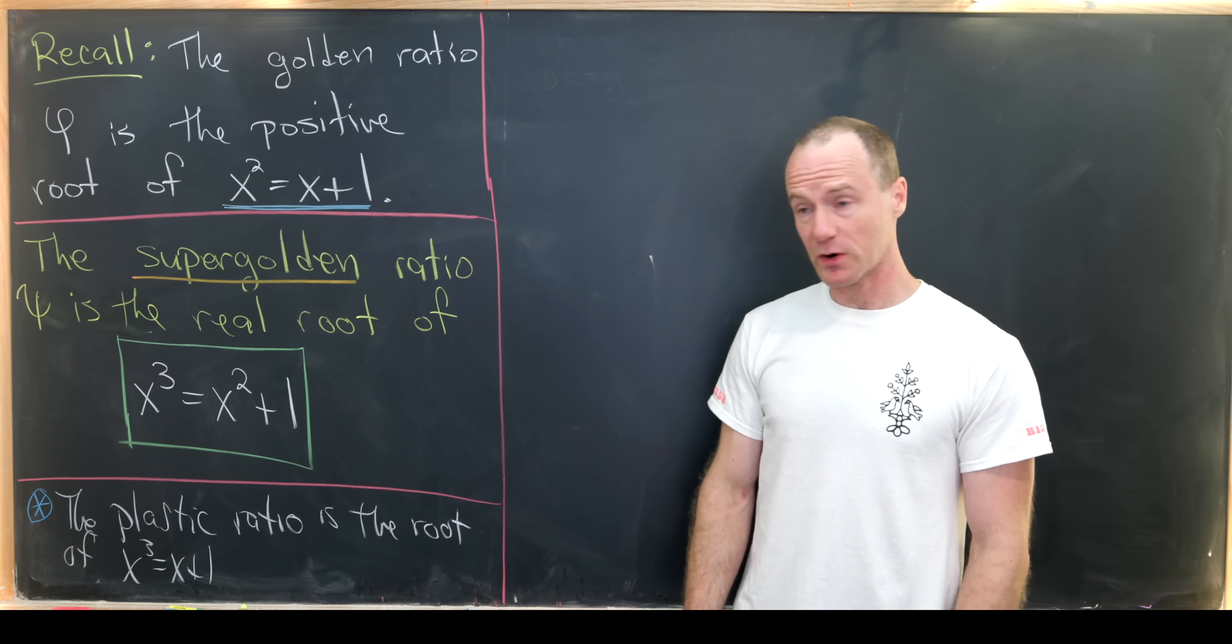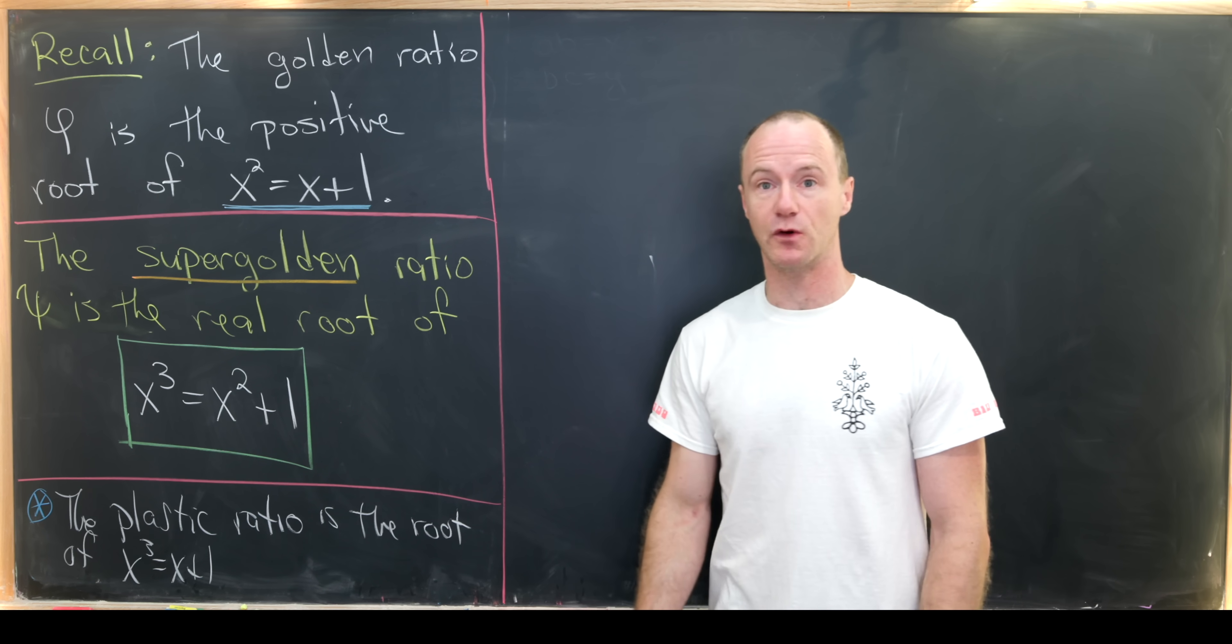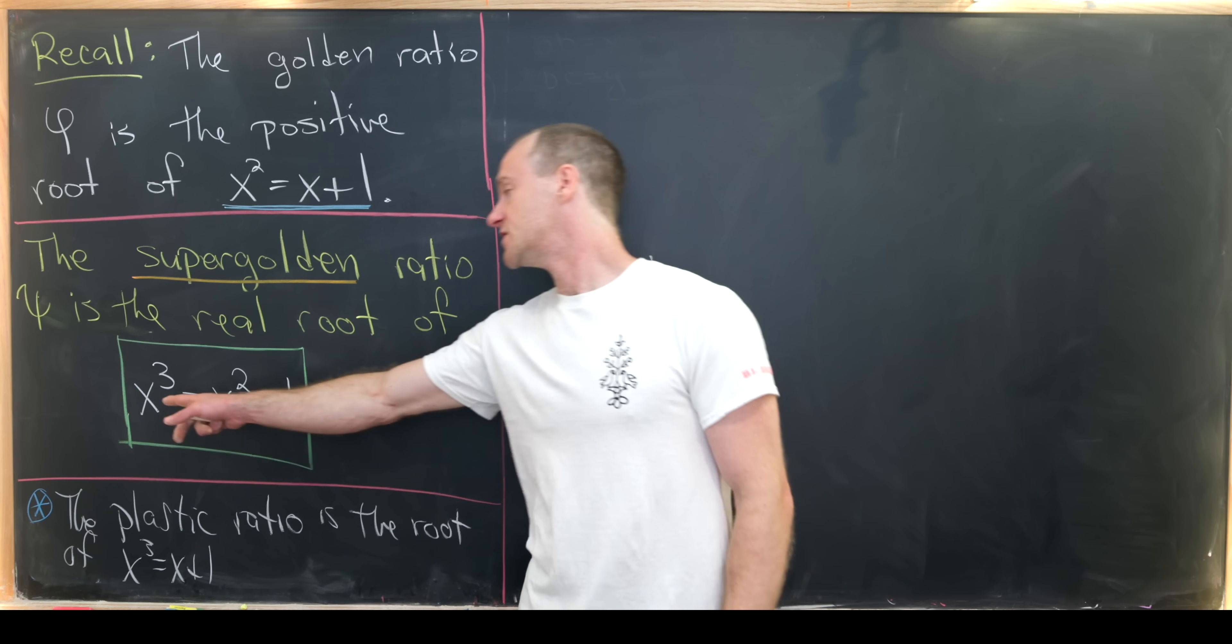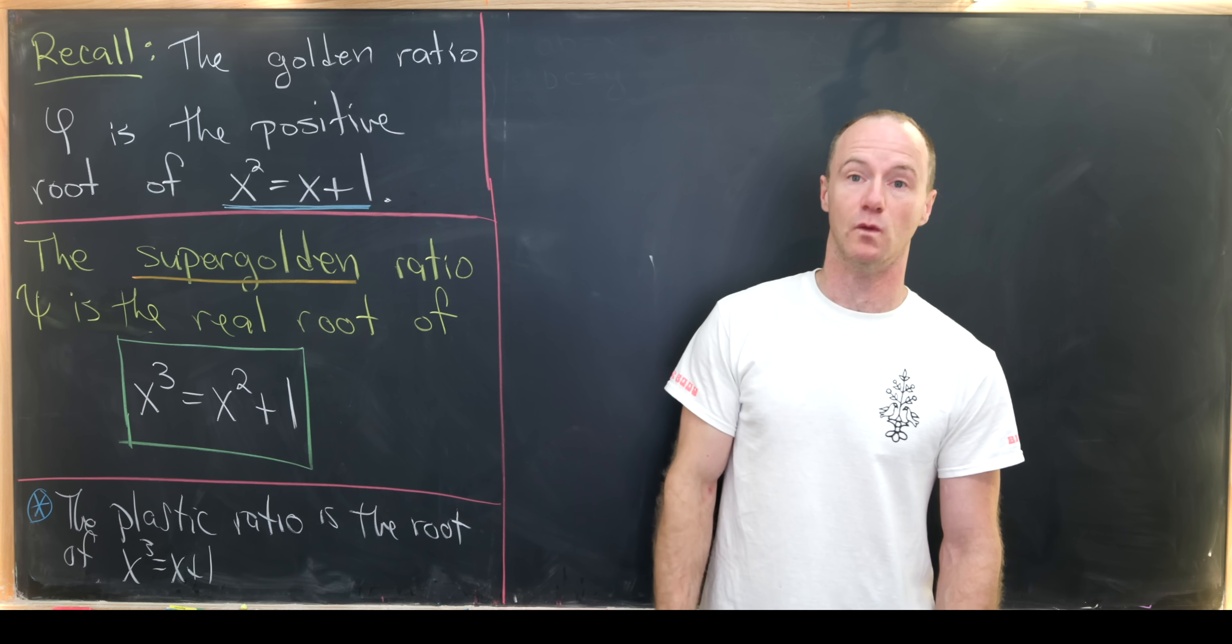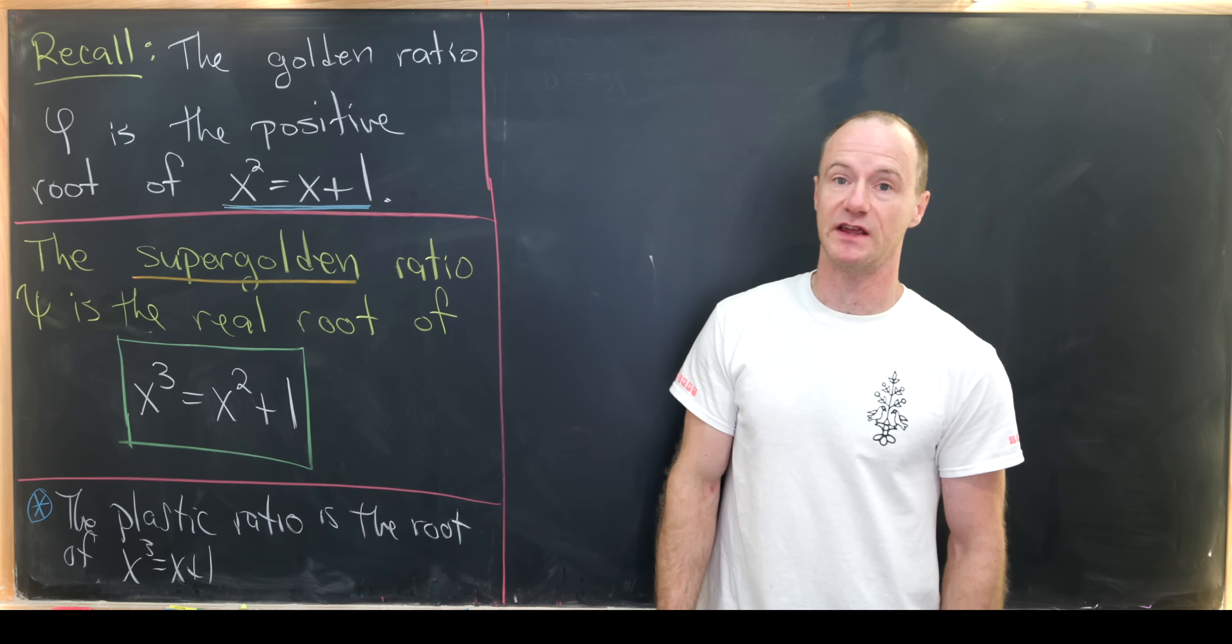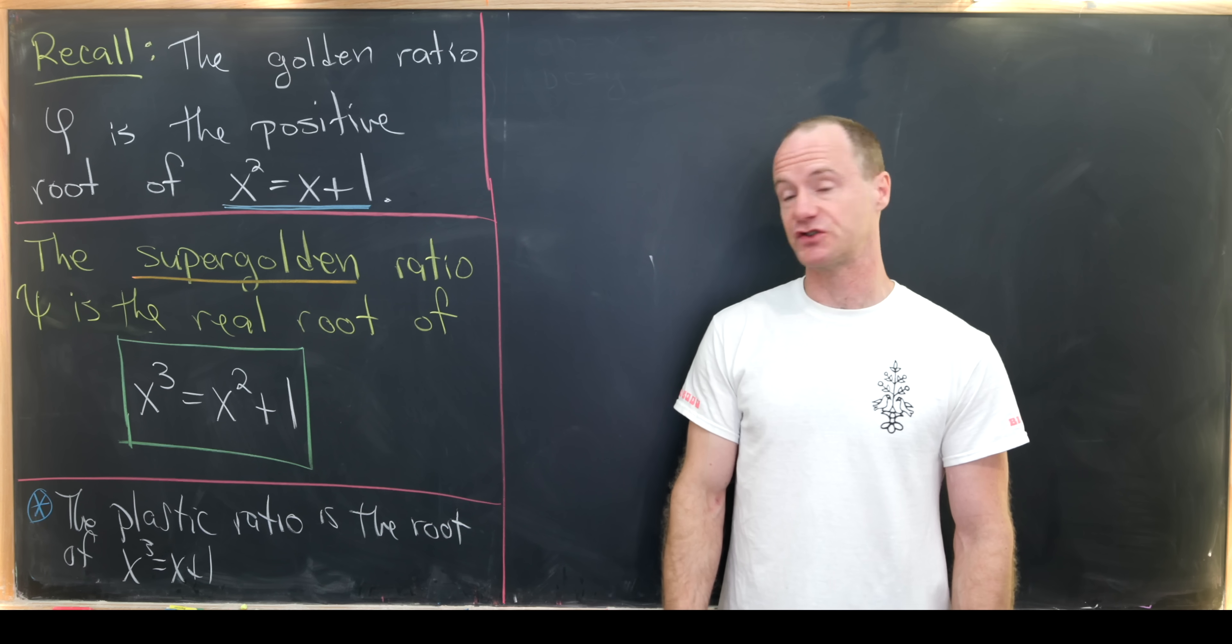Well, the super golden ratio, which is denoted by psi, is the real root of the following cubic equation, which looks pretty similar to this quadratic equation. It's just kind of boosted up a little bit. So we have x cubed equals x squared plus 1. And of course, finding roots of cubic equations is quite a bit more difficult than finding roots of quadratic equations. But our goal for this video will in fact be to find a closed form for this super golden ratio.